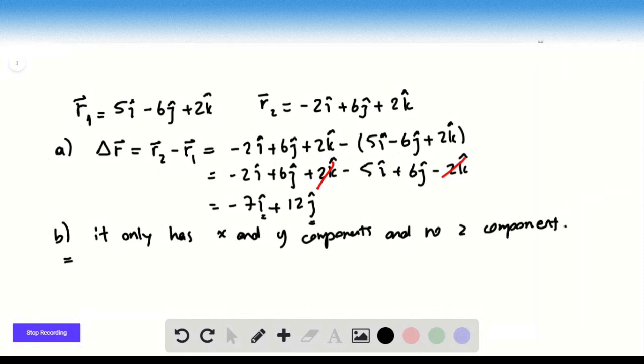Then, which means the delta R vector is on the xy-plane, which means it's parallel with respect to the xy-plane.